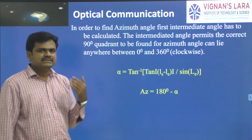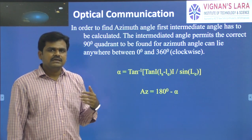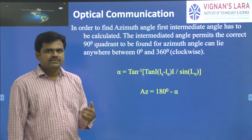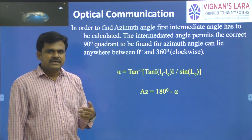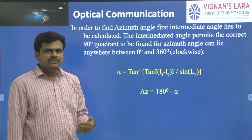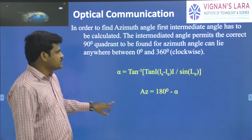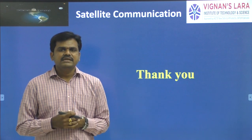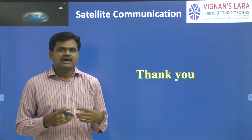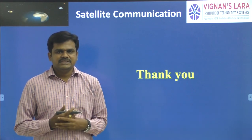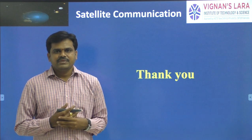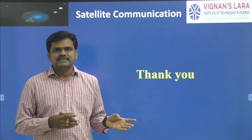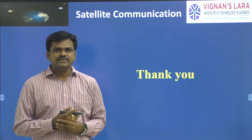So what we have learnt today: Kepler's three laws of planetary motion, what are look angles, what is elevation angle, and what is azimuth angle. In the next class, we will discuss a few more interesting concepts like orbital perturbations, sun transit, and the effects of eclipses on the satellite. Thank you very much.